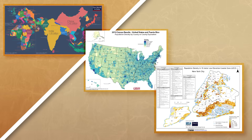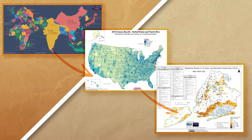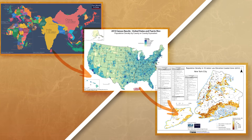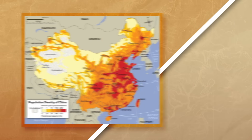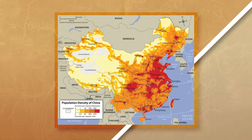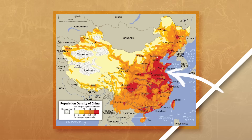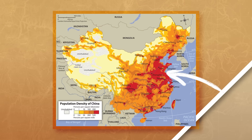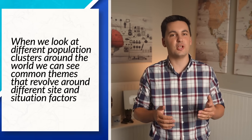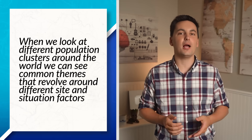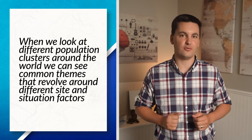If we change our scale from a global scale to a national scale or even a local scale, we can see that even this question becomes more difficult to answer. For example, when looking at China's population density, notice that the majority of areas with higher population density are near the coast of China or near China's rivers. And this isn't something by chance or unique to China. If we look at different population clusters around the world, we can see common themes that revolve around different site and situation factors.